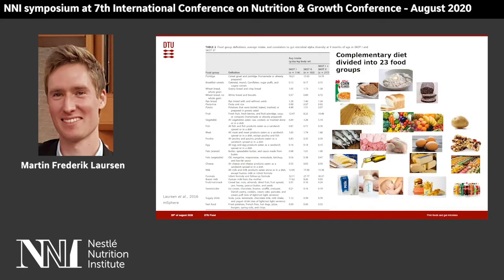To study this complex diet, we divided the complementary diet into 23 different food groups, as illustrated by the pictures here, and we can see the average intake in the cohorts in the table. At 9 months of age, this is a very interesting period because some infants will have almost all of their diet still covered by milk — formula or breast milk — while some may have a more equal distribution of milk-based versus solid foods, and some may even be completely weaned at this age.